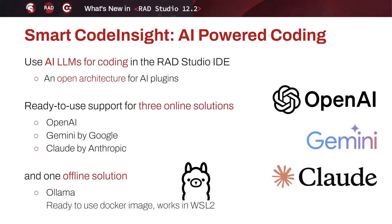We've called it Smart Code Insight — it's the ability to use AI LLMs within the RAD Studio IDE. Rather than teaming with one individual vendor and providing one specific option, we've decided to build an open architecture for plugins tied to artificial intelligence. The architecture is based on an open tools API, and you can create your own plugins for this architecture.